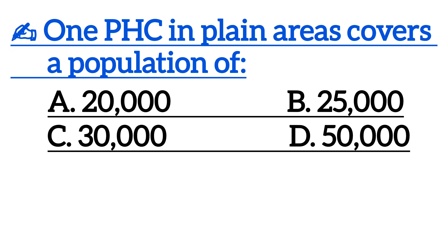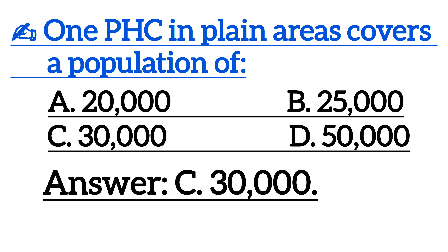Next one is: one PHC in plain areas covers a population of? Correct answer is option C, 30,000.